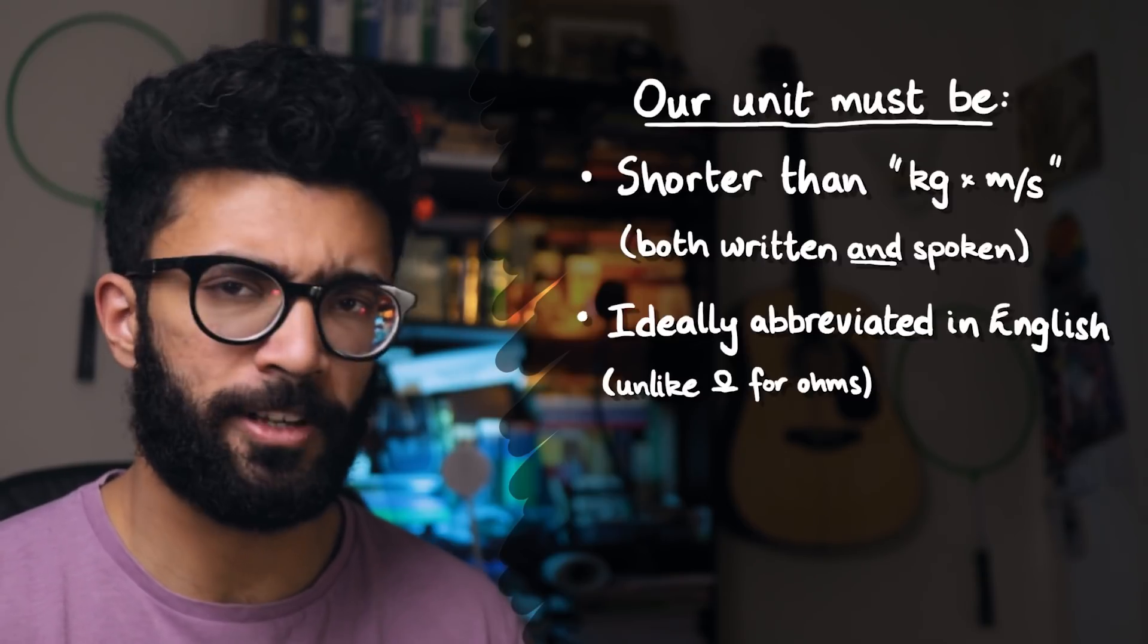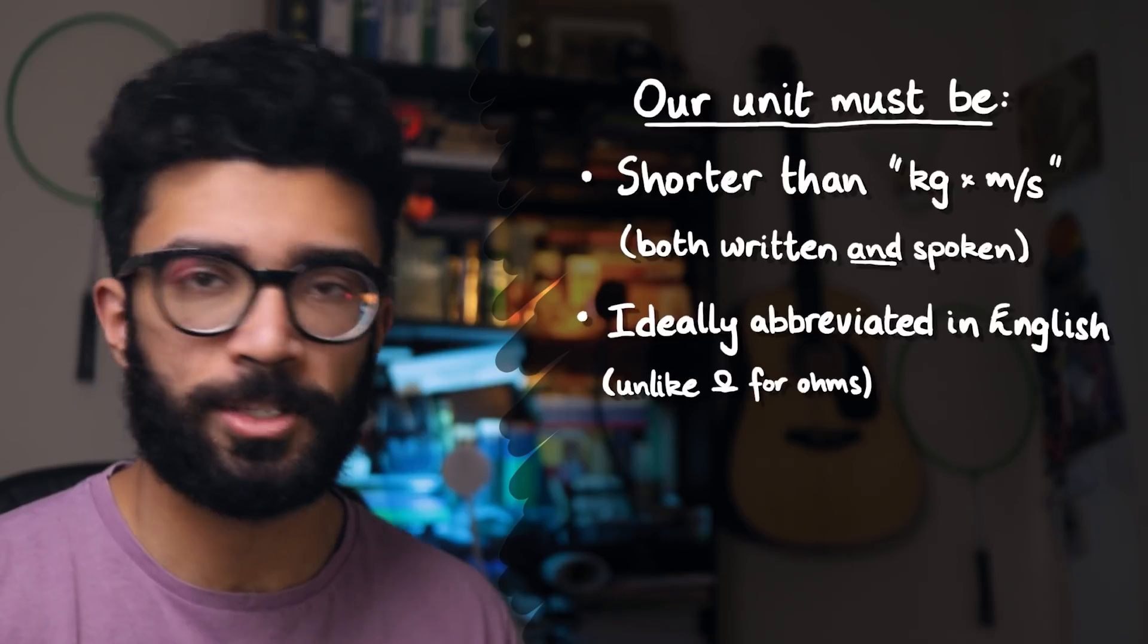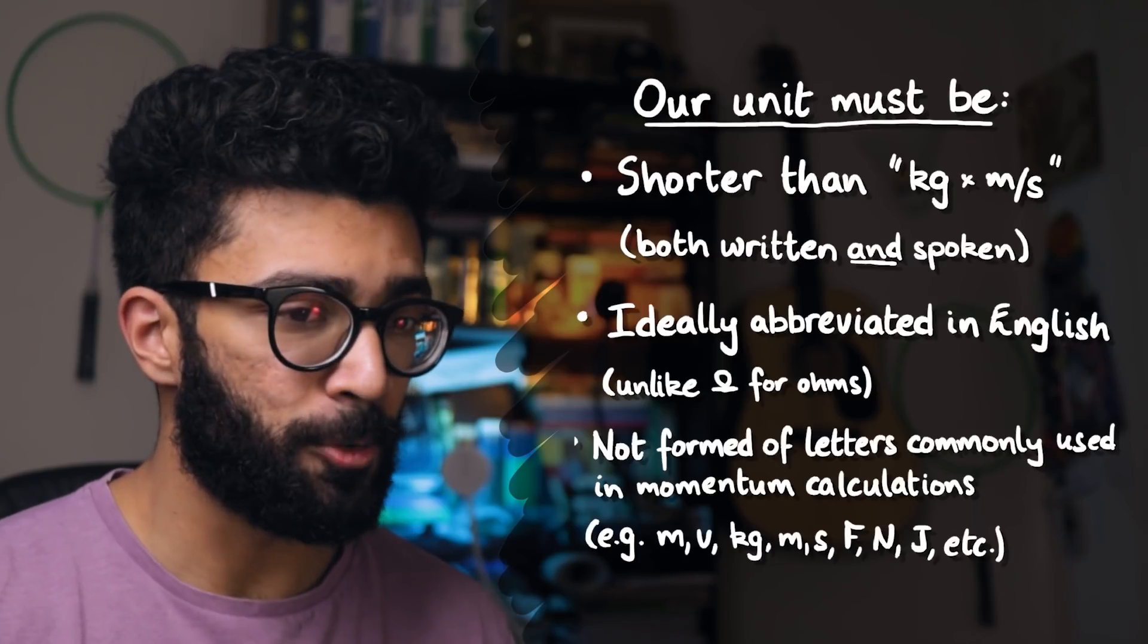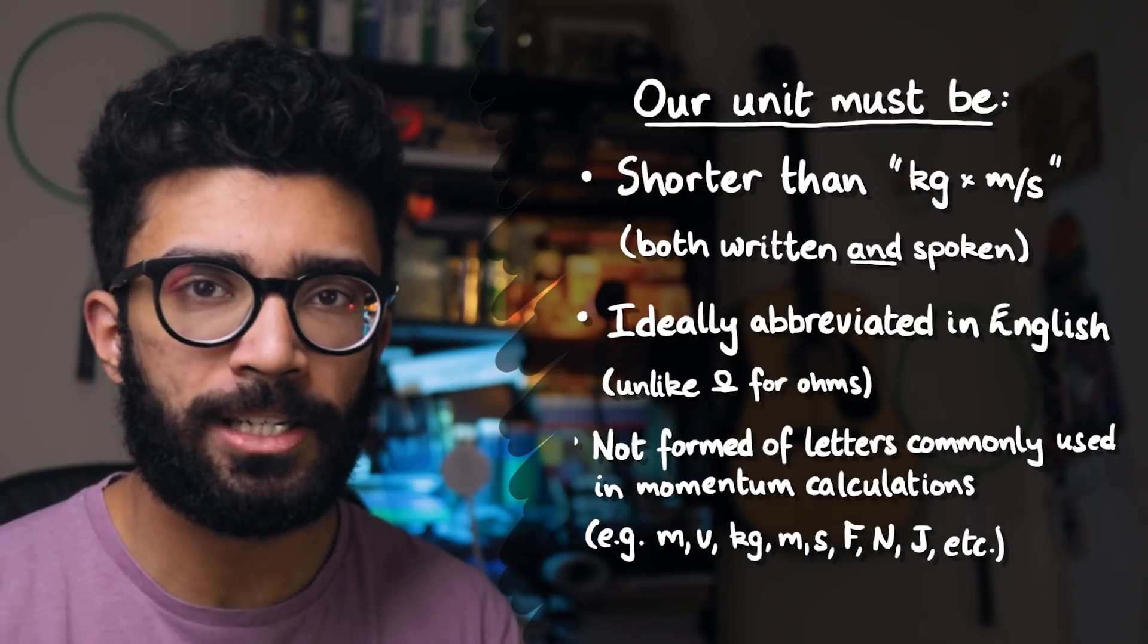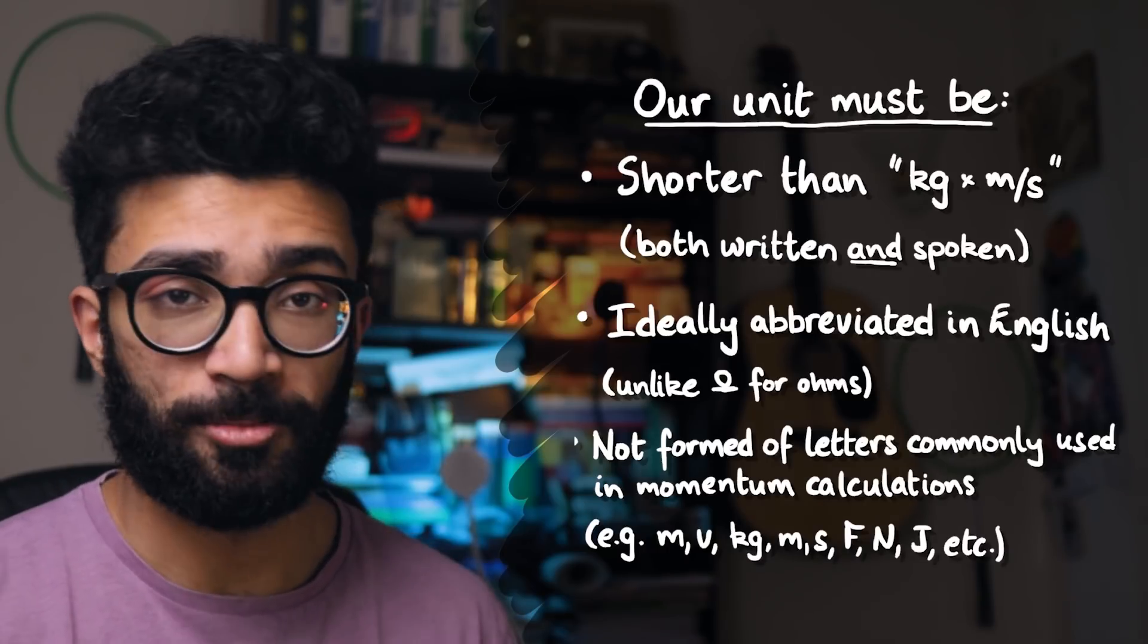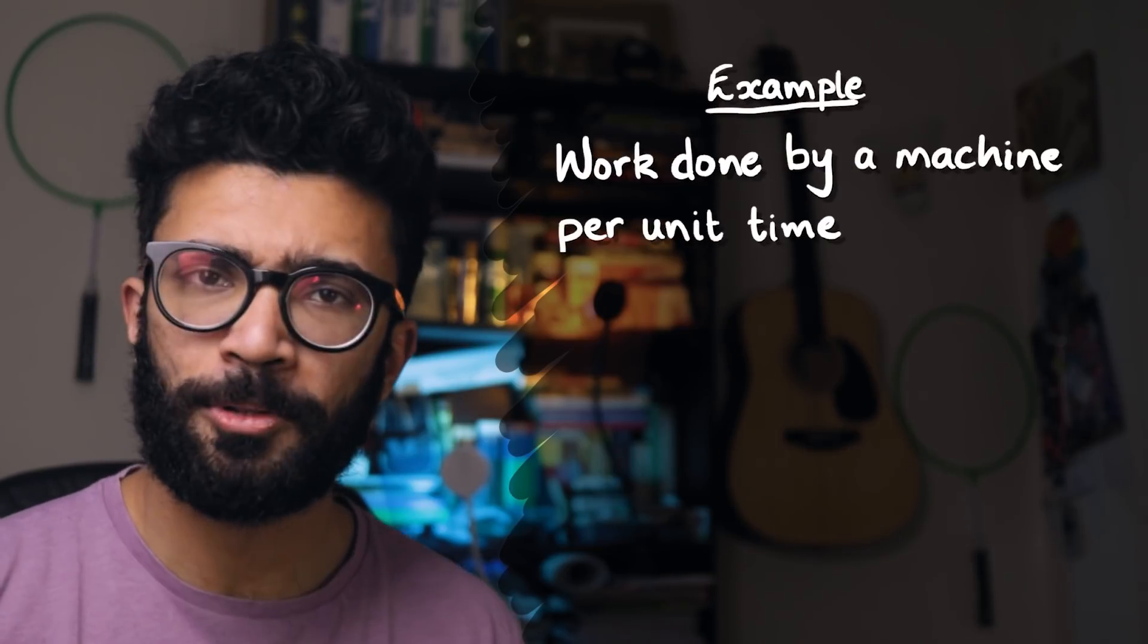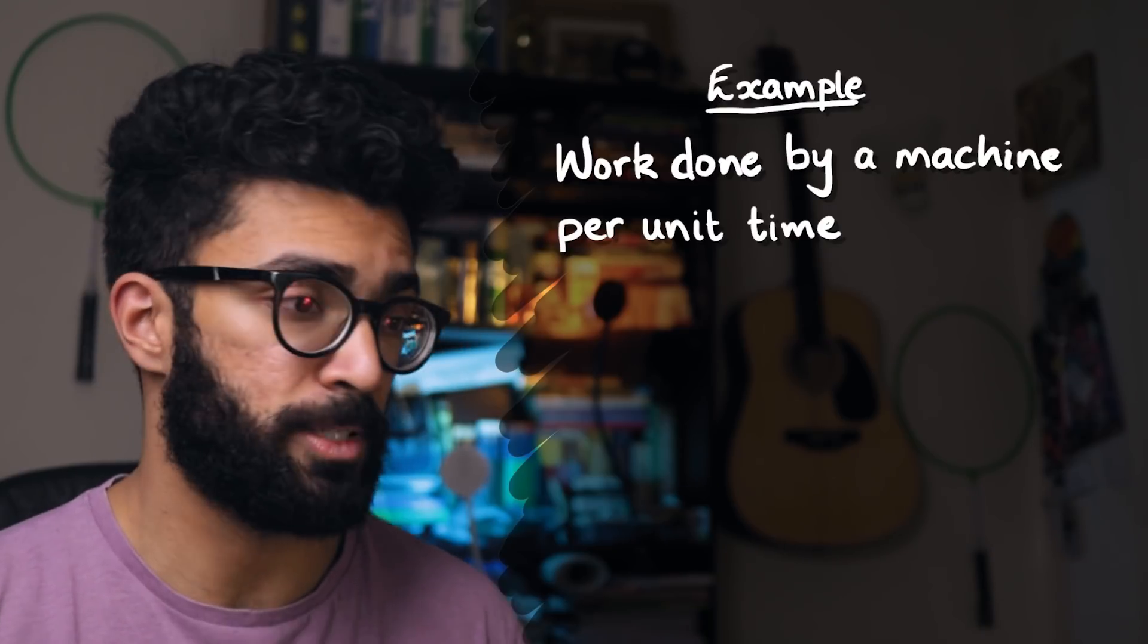Ideally, we'd also pick a unit that can be abbreviated in English rather than Greek. We've seen a couple of units abbreviated in Greek. For example, the letter omega is used to represent the ohm, which is the unit of resistance, but most others are abbreviated in English, so we'll put that constraint on ourselves as well. Additionally, we want to try and avoid letters in our abbreviation of the unit of momentum that are commonly used with momentum in physics problems. This is not always possible, of course, but it's a nice thing to try and work toward, because if we don't do this, then things can get very confusing very quickly.